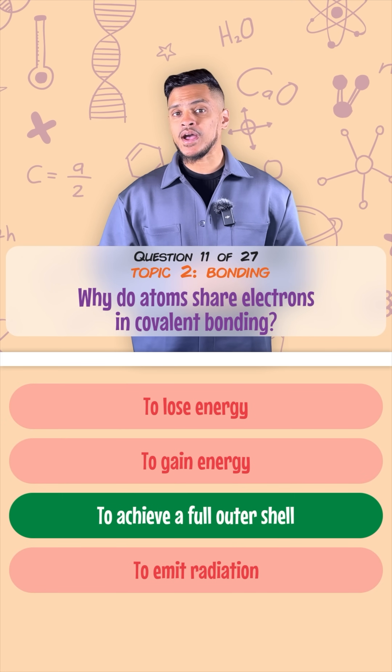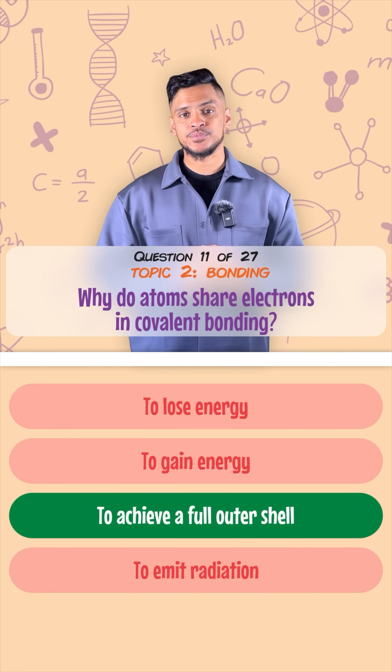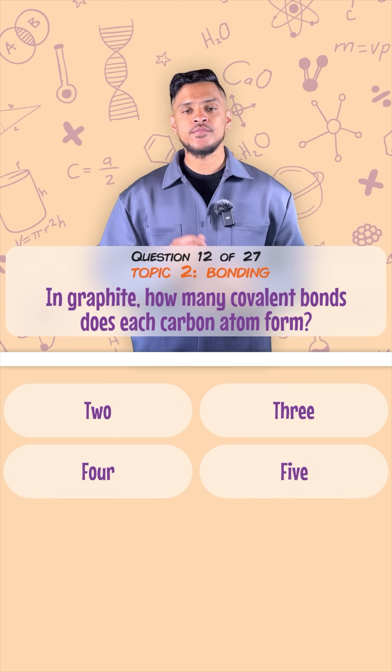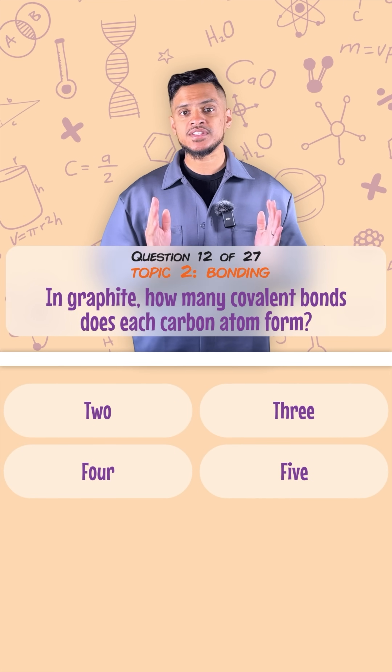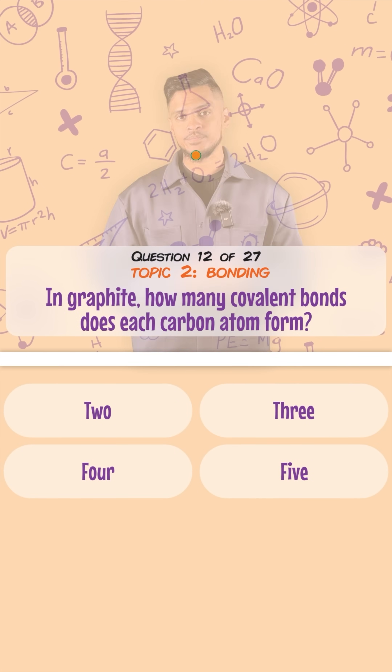Why do atoms share electrons in covalent bonding? It gives them a full outer shell, which makes them stable. In graphite, how many covalent bonds does each carbon atom form? It forms three.